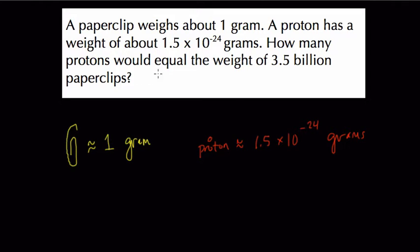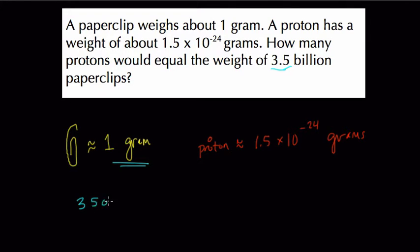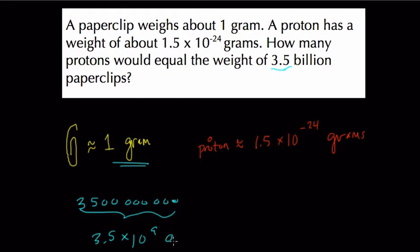We want to know how many protons would equal the weight of 3.5 billion paper clips. The first calculation is easy because 3.5 billion paper clips would weigh — well, they each weigh one gram — so the number of paper clips equals the number of grams. 3.5 billion is 3,500,000,000, which is 3.5 times 10 to the 9th. So we have 3.5 times 10 to the 9th grams.